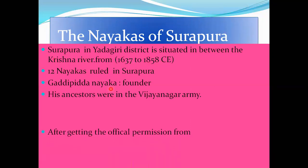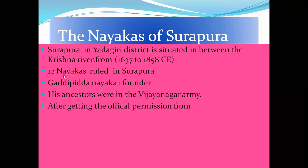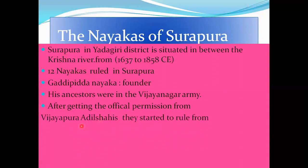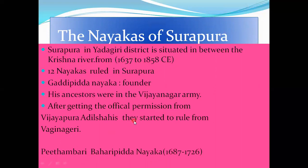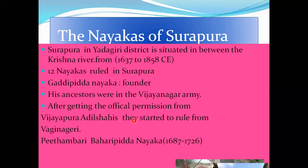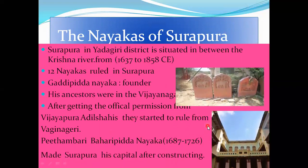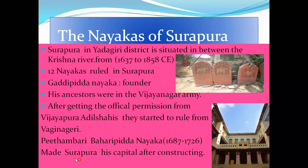After getting official permission from the Vijayanagara and Adil Shah rulers, they started ruling independently. Pithambari Bahari Piddha Nayaka started the rule at Vijayanagara Giri and made Surapura his capital after constructing it there.